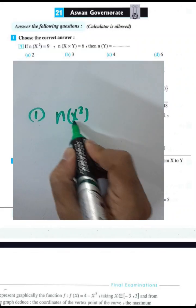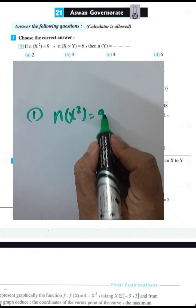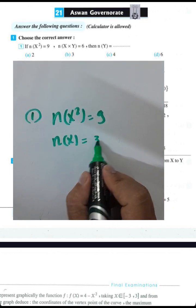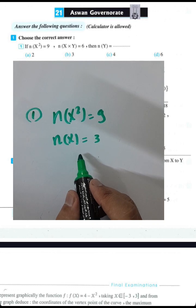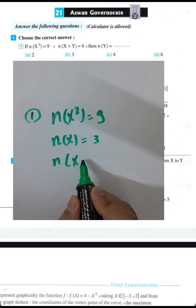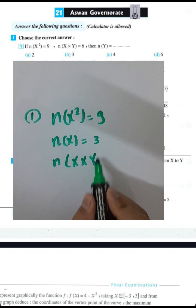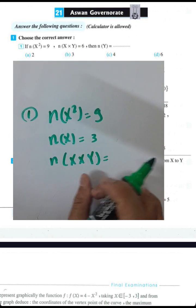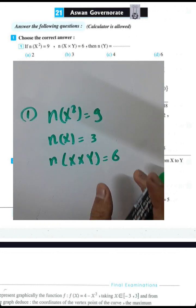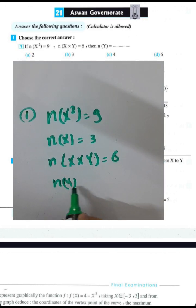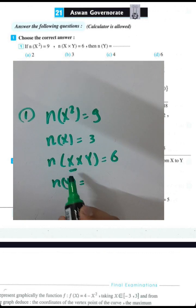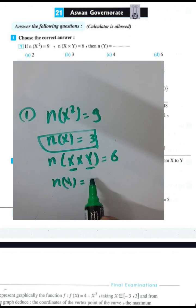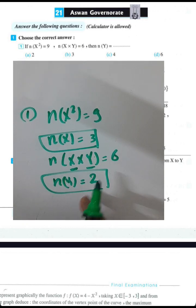If n(x²) was 9, then the number of elements of x equals 3. To find the number of elements of y: the number of ordered pairs in the Cartesian product x cross y equals 6. We know the number of elements of x is 3, so 3 times y equals 6, giving 3 times 2, meaning the number of elements of y equals 2.